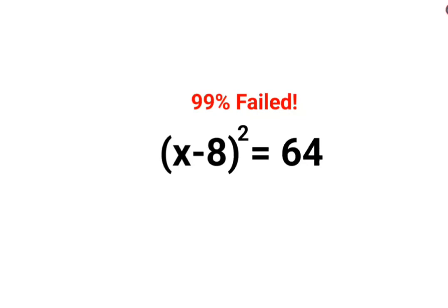Welcome everyone. So today we are going to understand how to solve this particular question. We have x minus 8 the whole square is equal to 64.